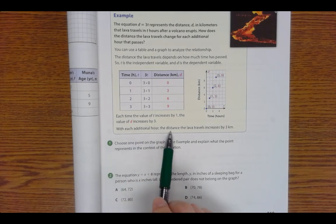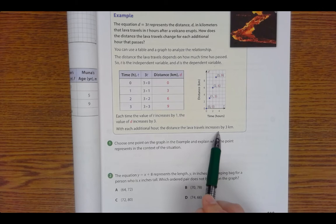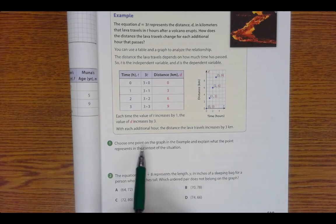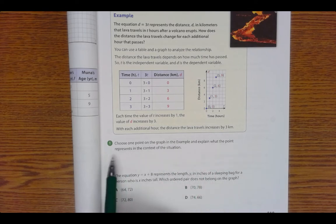So with each additional hour, the distance the lava travels increases by 3 kilometers. Number 1 says choose one point on the graph in the example and explain what the point represents in the context of the situation.